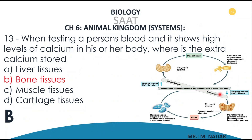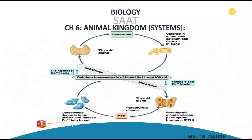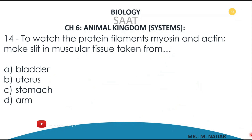The opposite happens if calcium levels in the blood fall. In that case, the parathyroid gland secretes PTH — parathyroid hormone — which stimulates the osteoclast to go to the bone and break down some damaged and worn-out cells, increasing the calcium level in the blood to maintain it at a constant range of 9 to 11 milligrams per 100 ml of blood.